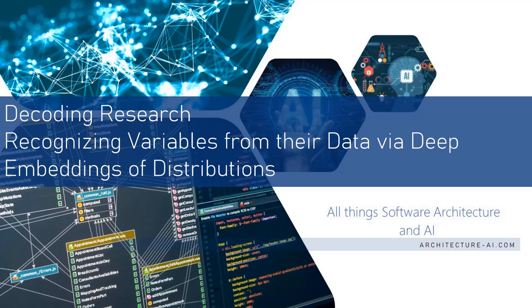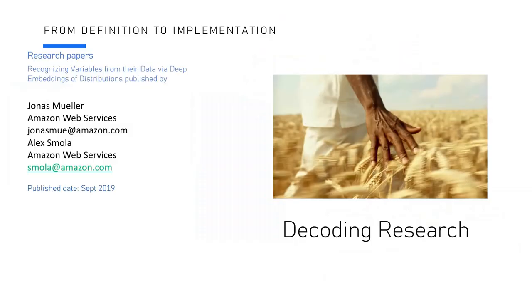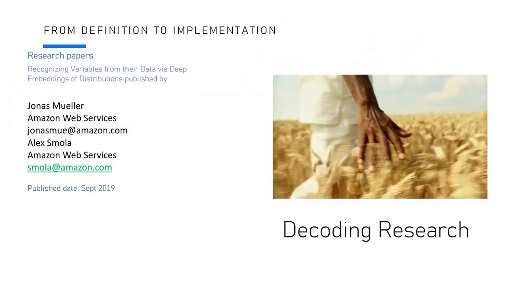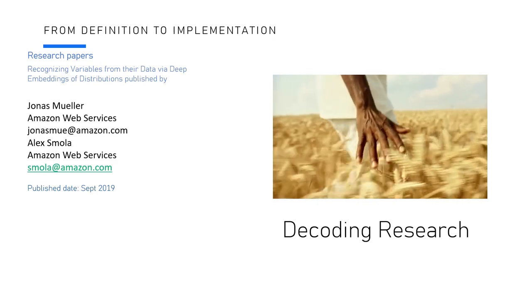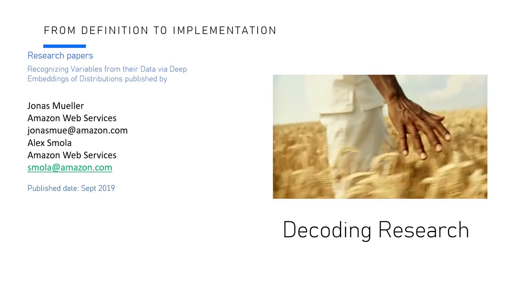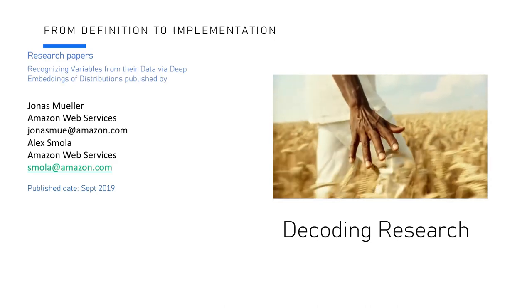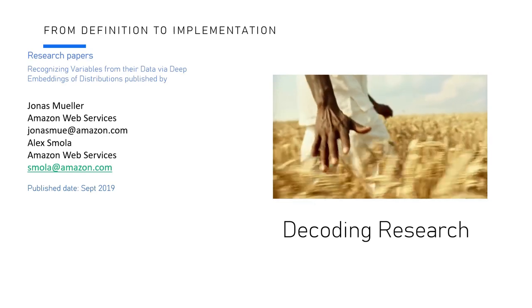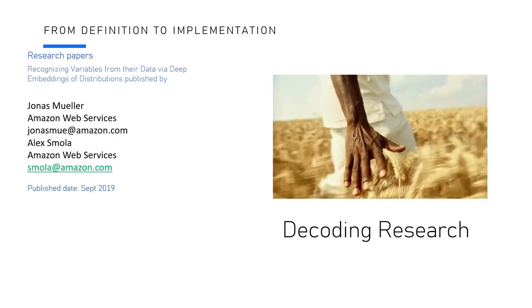Thanks for attending another session by Decoding Research, a series of webinars where we talk about research papers published on topics such as deep learning, machine learning, and technology. Today's session, we're going to be talking about recognizing variables from their data via deep embeddings of distribution. This is a very interesting paper. This paper was published in September 2019 by Jonas Mueller and Alex Smoller, currently working with Amazon.